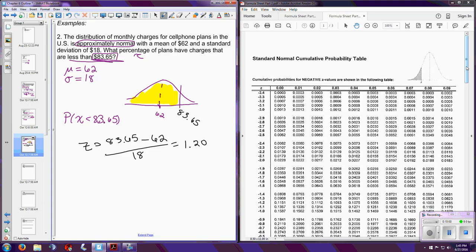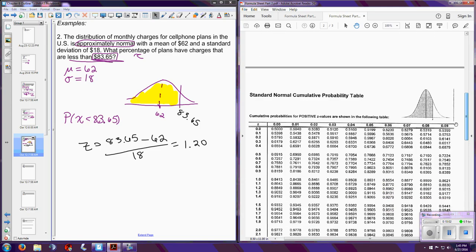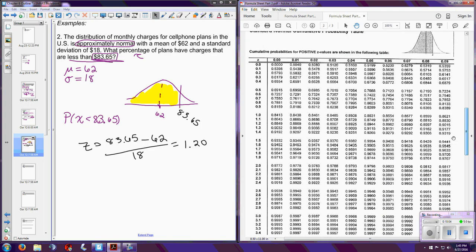So when we plug into our Z-score formula, we get 83.65 minus 62, all divided by 18. Which numerator first, then we divide, gives us 1.20. Remember here, in Chapter 3, you were told to always round Z-scores to two decimal places. This table is the reason why.